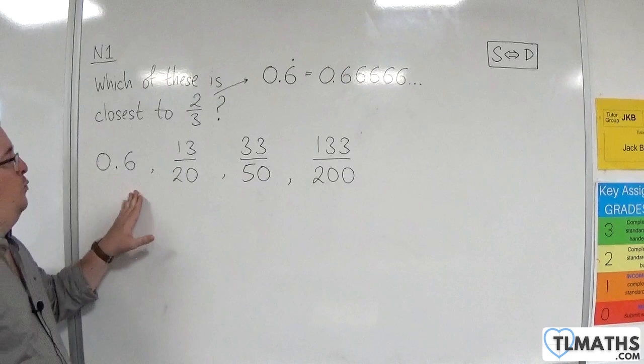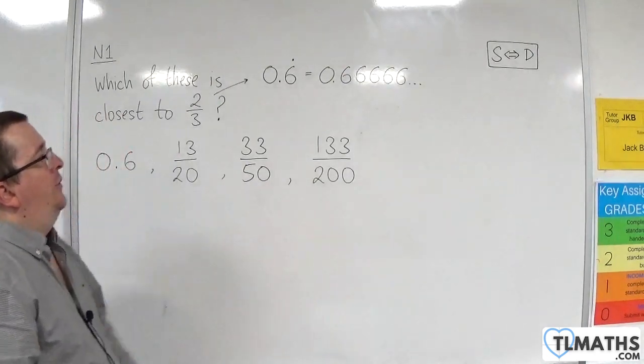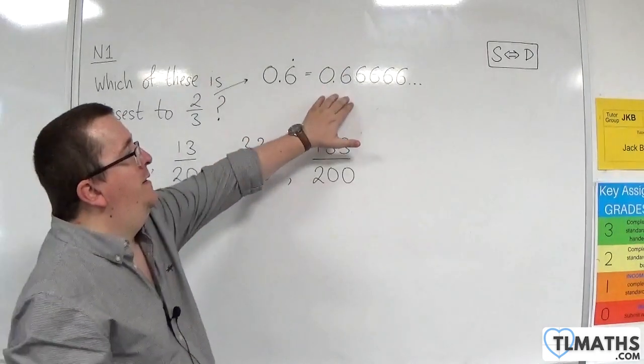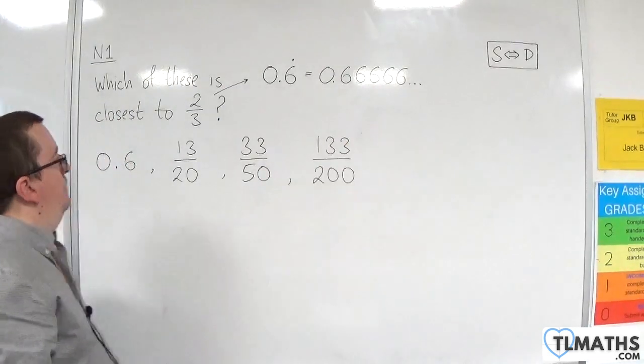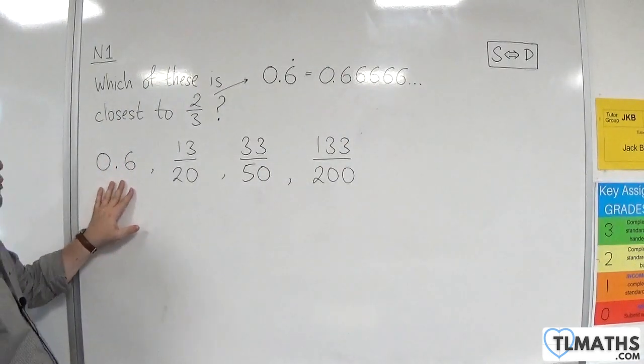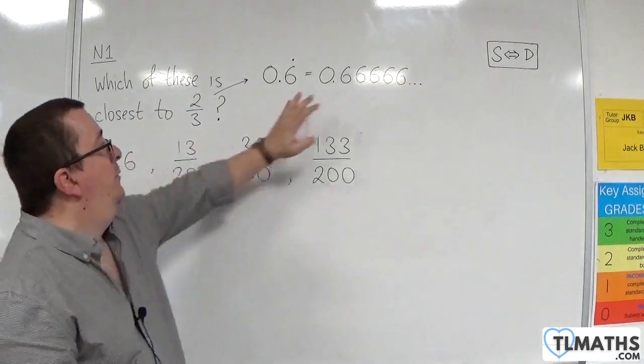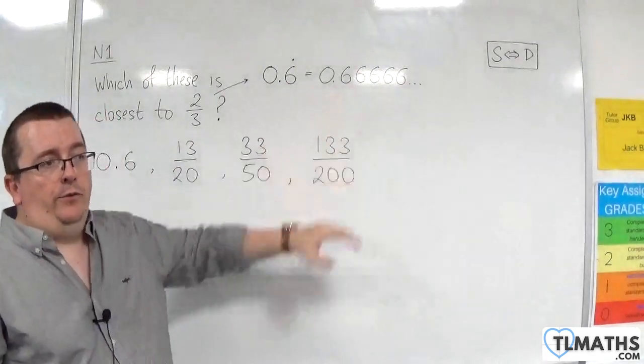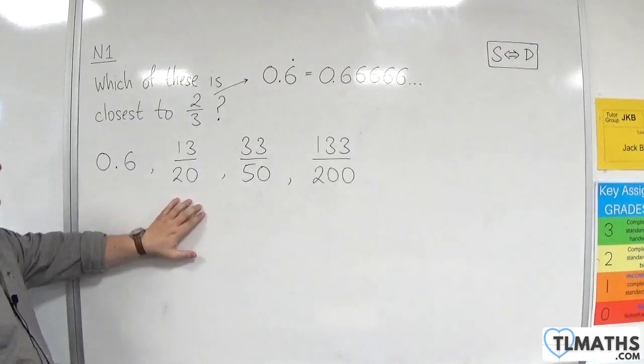Okay, so we want to find out which one of these is closest to that number there. So we start off with 0.6, which is already in decimal format. So that already seems relatively close. Okay, but let's continue on to the next one.